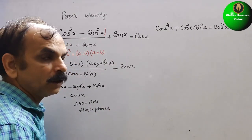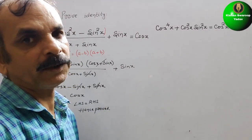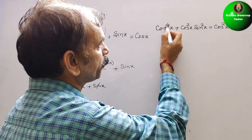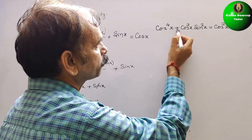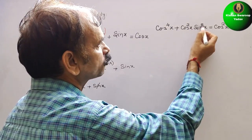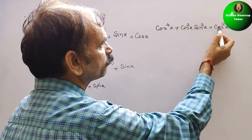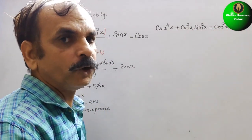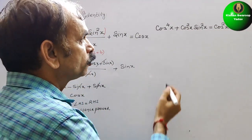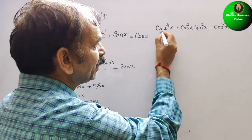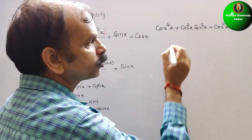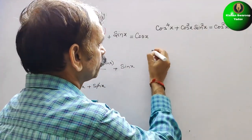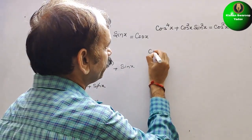Now for the second question: prove that cos to the power 4x plus cos squared x times sin squared x equals cos squared x. We can see that cos squared x is common in both terms, so we factor it out.